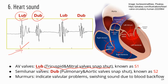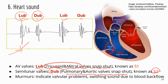After the two ventricles pump blood into their respective blood vessels, blood tries to come back but encounters the two semilunar valves, which snap shut. That causes the second sound — the dub sound, known as sound two. So the lub comes from the two AV valves closing first, and the dub is due to the closing of the semilunar valves — the pulmonary and the aortic.